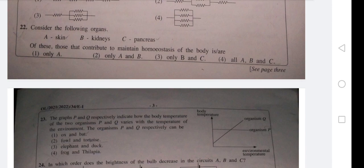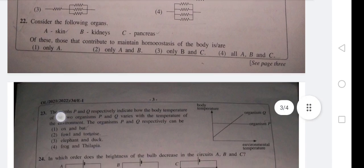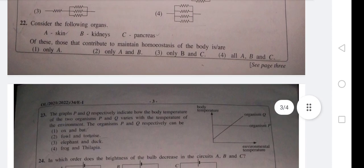Kidneys help to maintain the amount of water. Pancreas helps to maintain the blood glucose level. So all A, B, and C are contributing to maintain homeostasis. Question 22, fourth one is the answer.